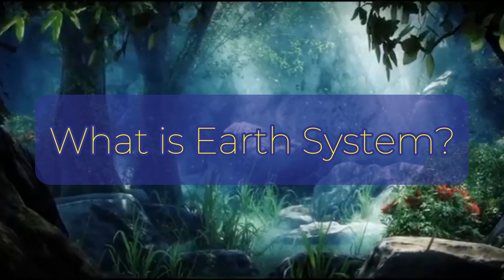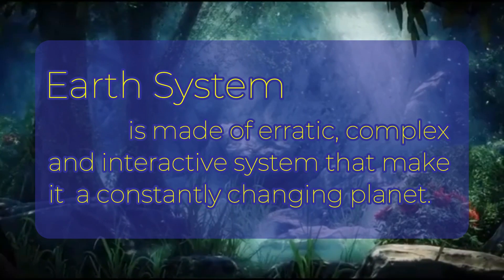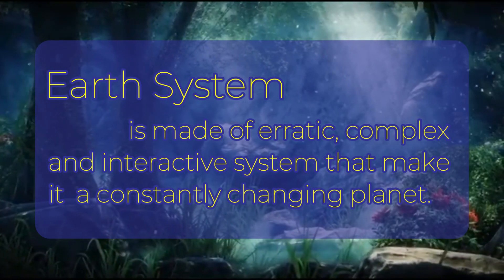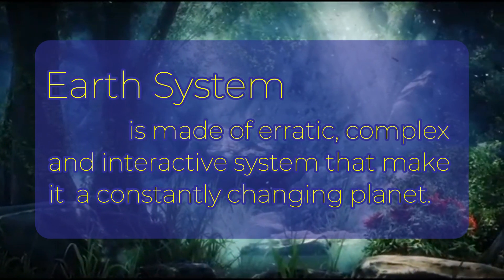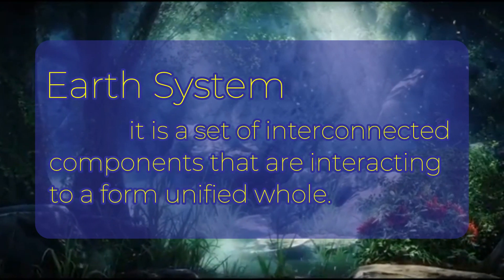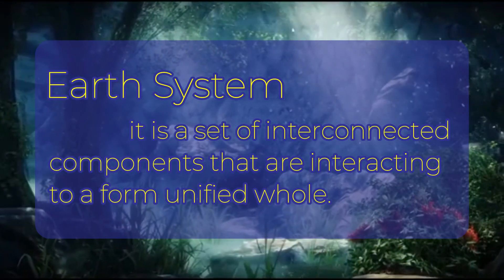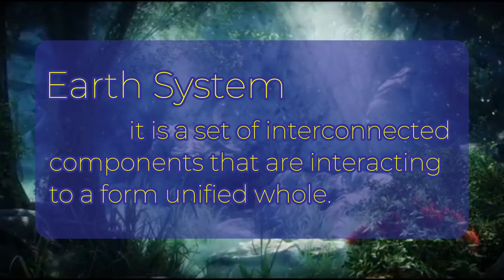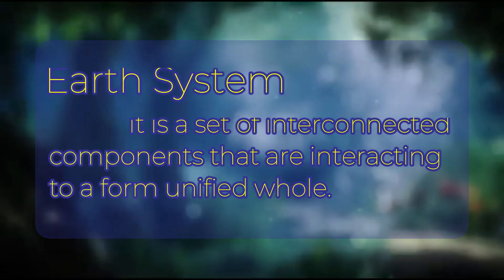What is the Earth system? Earth is made up of an erratic, complex, and interactive system that makes it a constantly changing planet. It is also a set of interconnected components that are interacting to form a unified whole. To understand how the Earth system works, let's have an analogy.